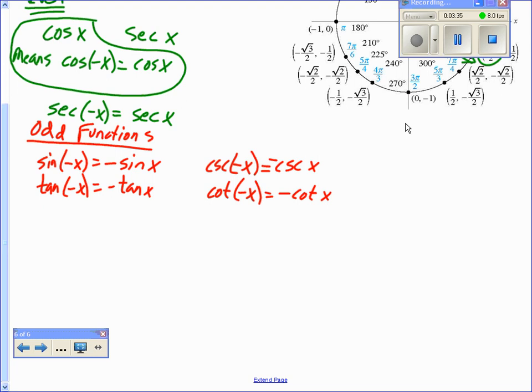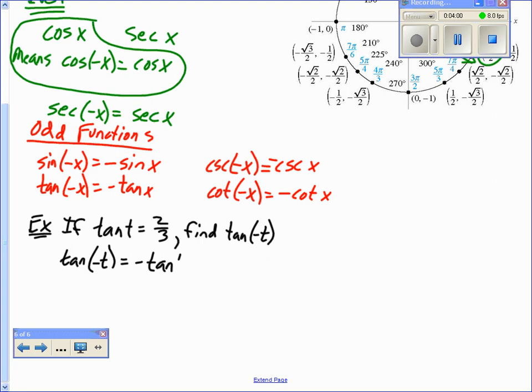Okay, so let's say you're doing, let's say if the tangent of t, we don't know what t is, but let's say the tangent of t is 2 thirds. Well, then, find tangent of negative t. You say, well, since it is odd, this is true.